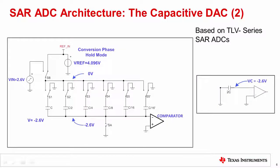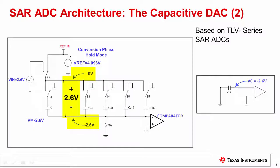After the acquisition phase ends, the conversion phase starts with the hold mode. During the hold mode, switch SA opens and all binary weighted capacitor switches S1 to S5 are connected to ground, resulting in a voltage of VC = -2.6 volts at the comparator input. Notice the voltage is inverted, since the opposite side of the binary weighted capacitor is now grounded. Switch SB disconnects from the input pin and connects to the reference voltage input. Look at the figure on the right for a simplified view of the circuit.